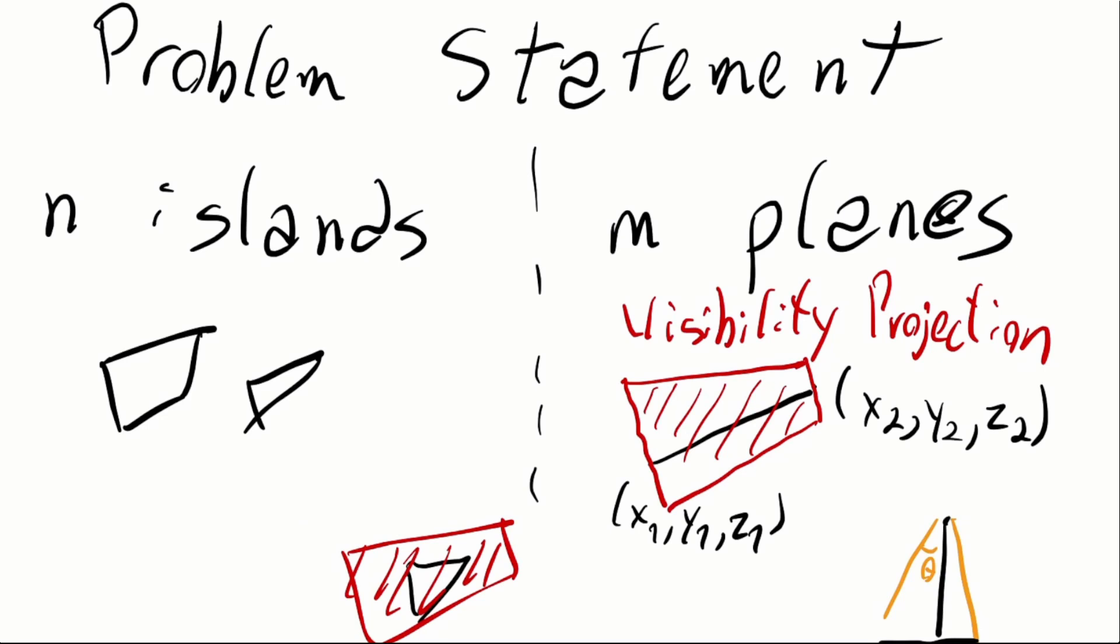In this scenario we have n planes flying over this archipelago, and each of them have a camera in which they can view a region of this 2D plane. So they have a visibility projection on it. There are at most 100 planes, and we are given the start position x, y, z1,